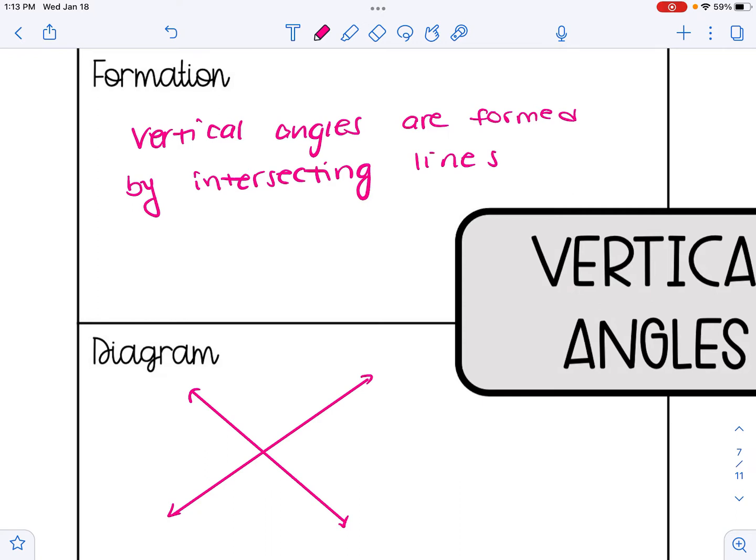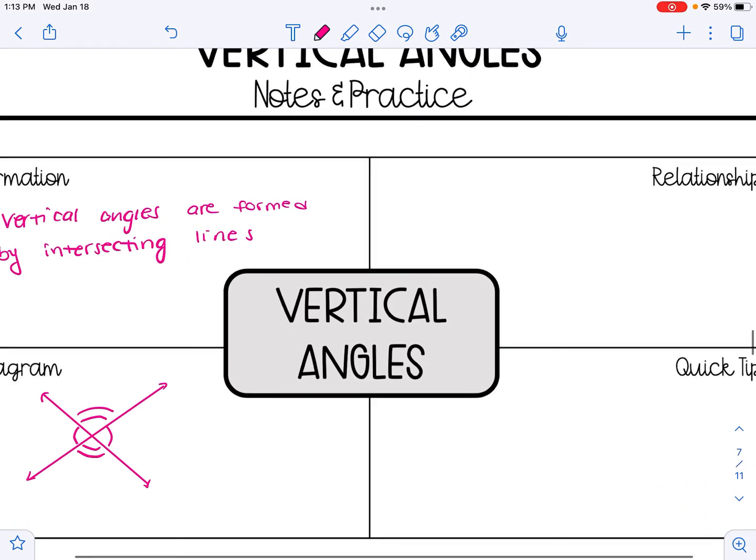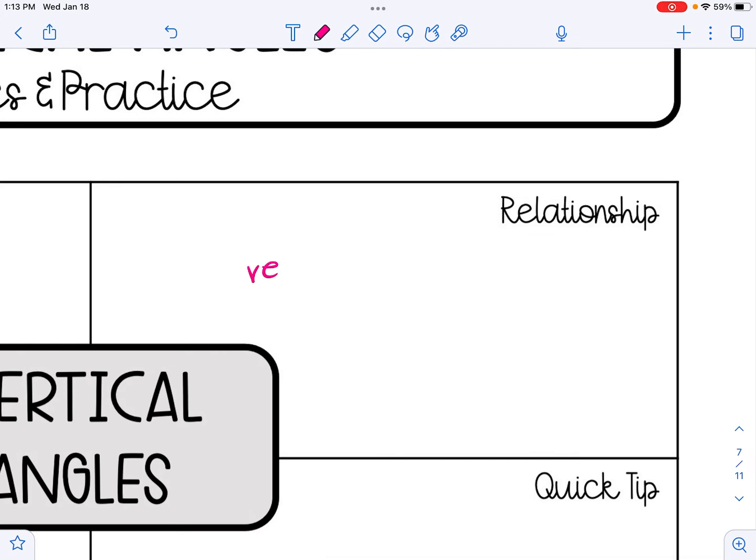The angles that are across from each other are congruent to one another. So these two angles would be congruent, and then these two angles would be congruent. Based on that, the relationship is that vertical angles are congruent.